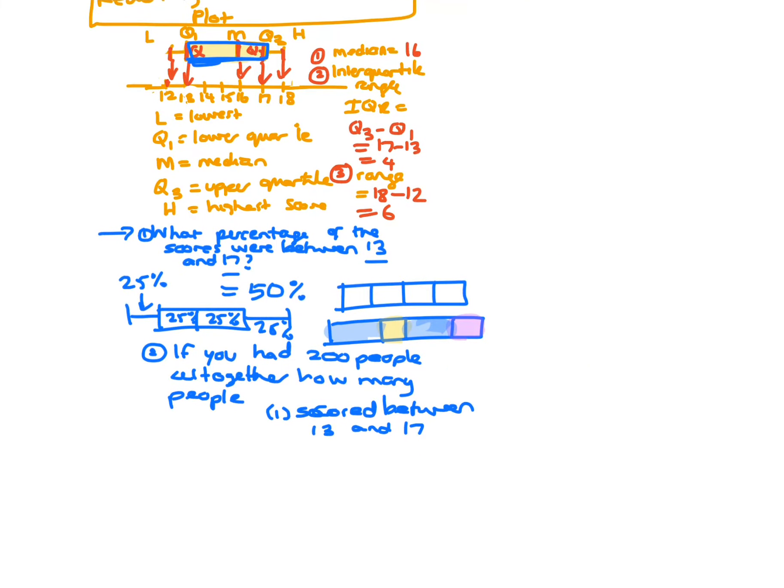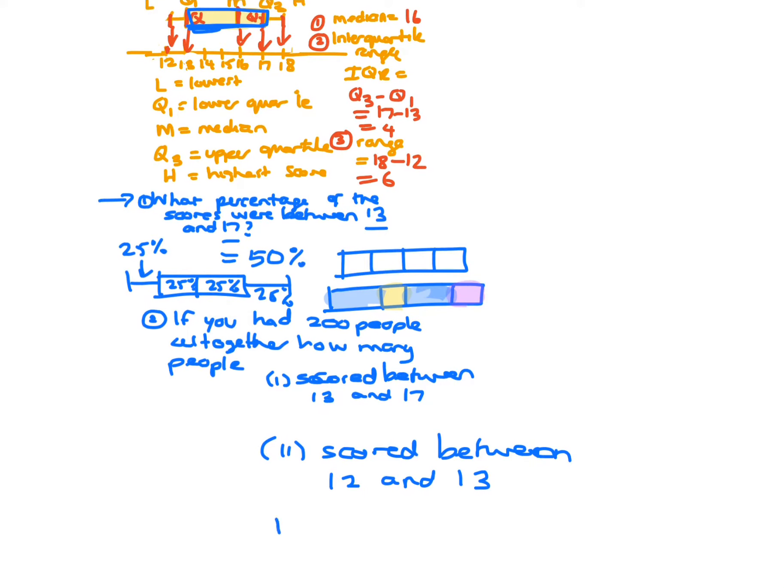Okay. So we'll also look at how many scored between, let's go between 12 and 13. And then how many scored more than a particular number. Let's say they scored more than 13. All right, so let's have a think about that.